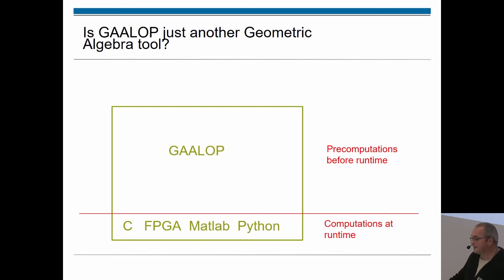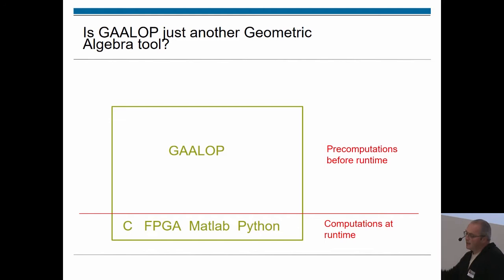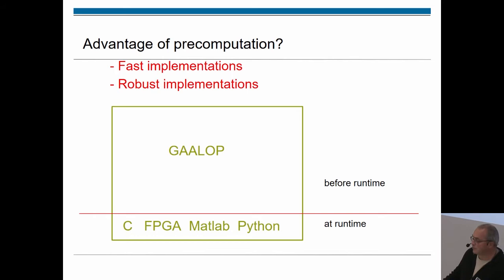What is GALOPweb in principle? It is not just another geometric algebra library. It is a tool to pre-compute as much as possible before runtime — not only on the level of products of geometric algebra, but of complete algorithms. At runtime, only very simple operations have to be done, because much is already symbolically pre-computed. This leads to fast implementations.